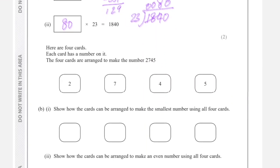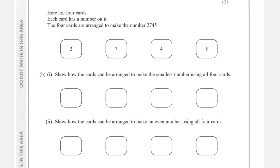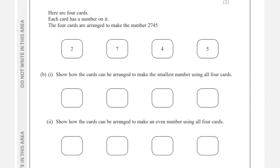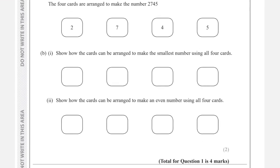Question number two: here are four cards, each card has a number on it. The four cards are arranged to make the number 2745. Show how the cards can be arranged to make the smallest number using all four cards. Whenever you see a question like this, arrange the cards in ascending order — from small to big — and automatically the number you get will be the smallest possible. So the smallest number is 2457.